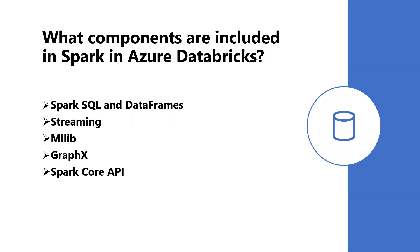What is Streaming? Streaming is real-time data processing and analysis for analytical and interactive applications. It integrates with HDFS, Flume, and Kafka. What is MLlib? MLlib is a machine learning library consisting of common learning algorithms and utilities, including classification, regression, clustering, collaborative filtering, dimensionality reduction, as well as underlying optimization primitives.